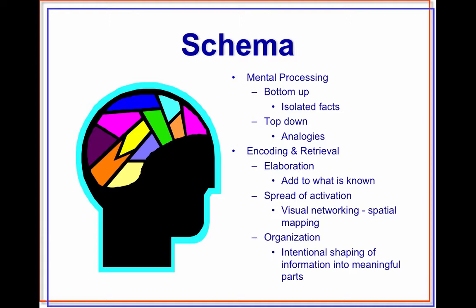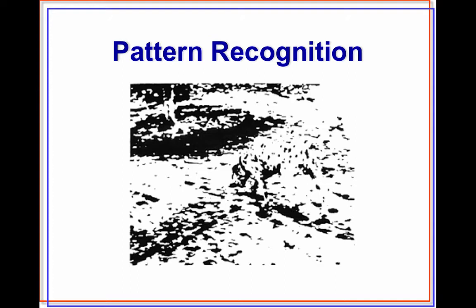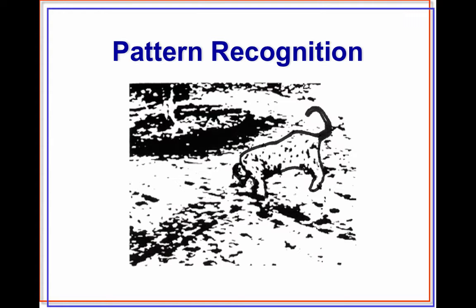Another theory has to do with pattern recognition. Many of us have the ability to look at a scattered set of dots and form them into something recognizable. For example, some people might look at this picture and see a dog in the middle of it. Next time you're out walking on the street, look around and see if you can find disparate patterns and create some kind of image.